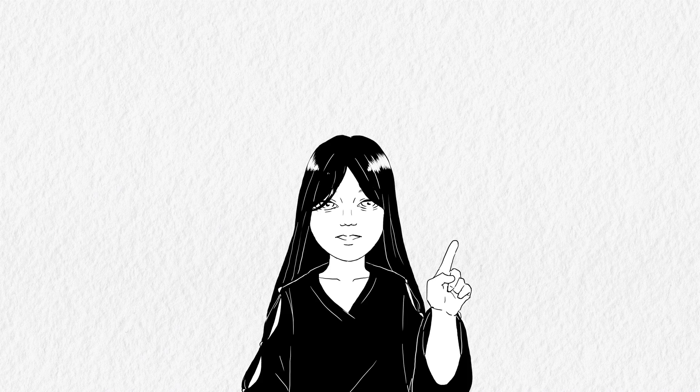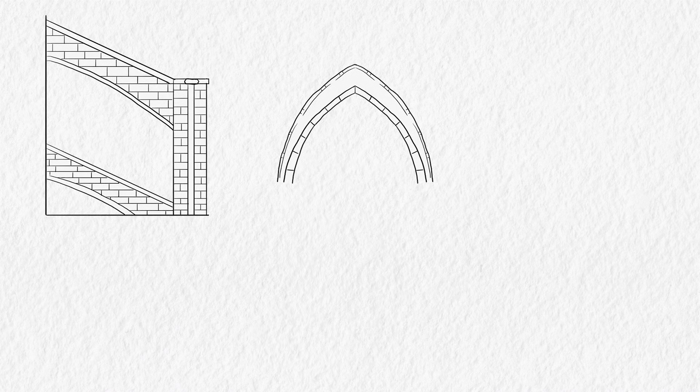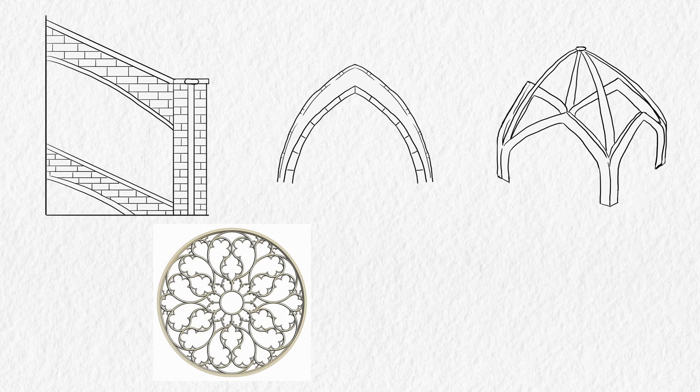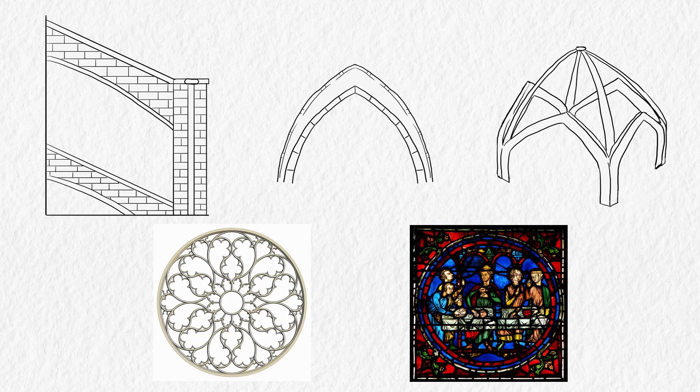They also added other key elements to Gothic buildings like flying buttresses, pointed arches, ribbed vaults, rose windows, and stained glass windows.